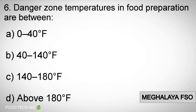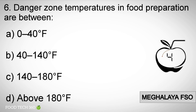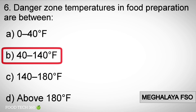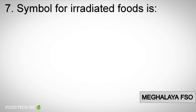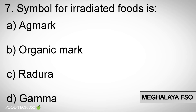Question number six: Danger zone temperatures in food preparation are between. Options: A) 0 to 40 degrees Fahrenheit, B) 40 to 140 degrees Fahrenheit, C) 140 to 180 degrees Fahrenheit, D) Above 180 degrees Fahrenheit. Correct answer: B) 40 to 140 degrees Fahrenheit.